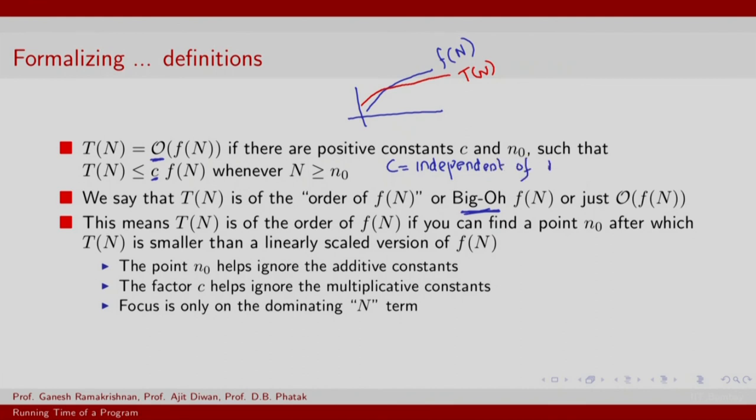Constant C helps ignore multiplicative constants, as I just pointed out. It ignores multiplicative constants. N naught helps you ignore any additive constants. The whole idea is to focus on the dominating N term. Thank you.